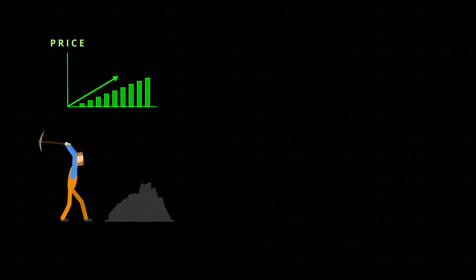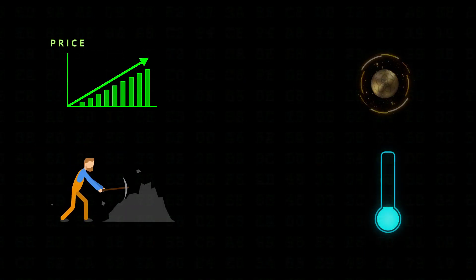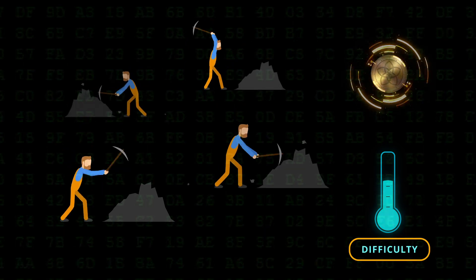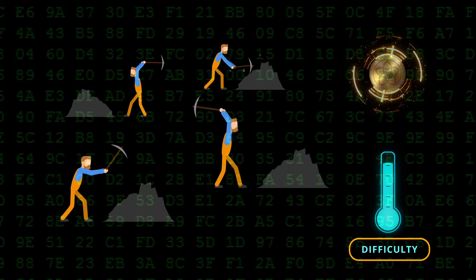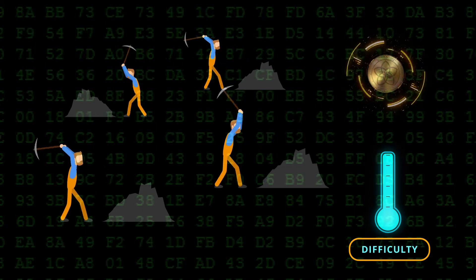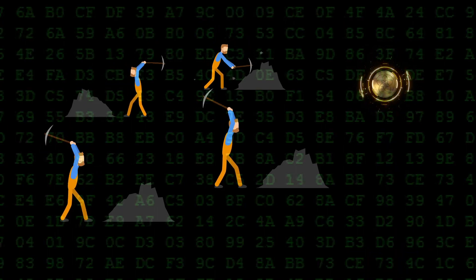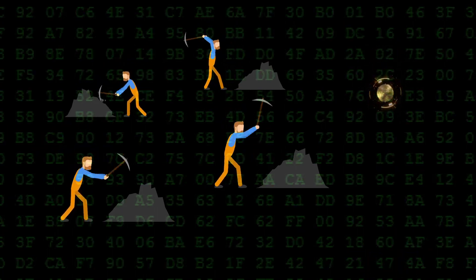If price increases, the profitability of mining increases, causing more miners to mine this token, increasing the hash rate. The smart contracts react by increasing the difficulty, thus increasing the cost of production. Eventually the profitability of mining decreases.